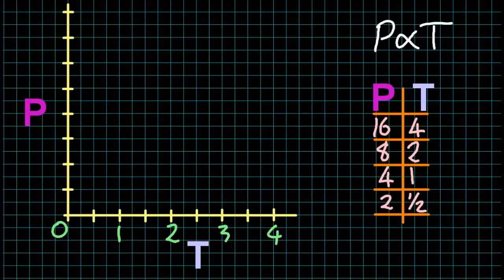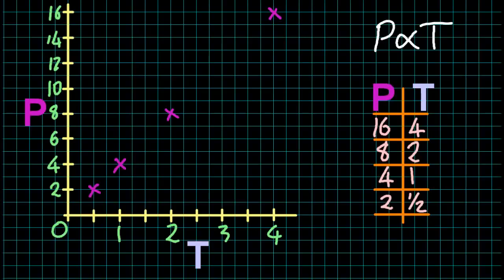Let me graph this data. And it's a straight line. So pressure and temperature are directly proportional. One goes up, the other goes up by the same factor.